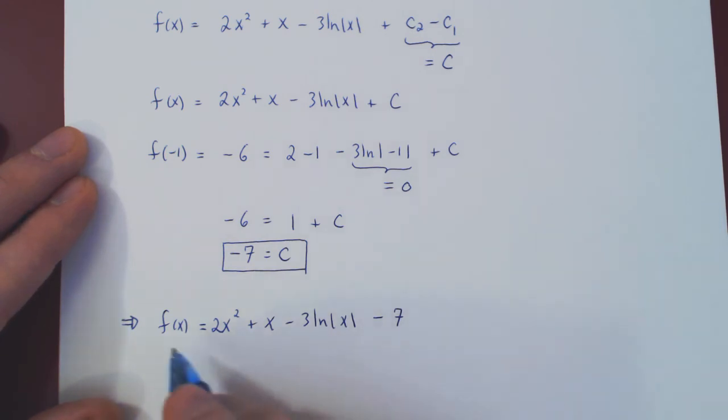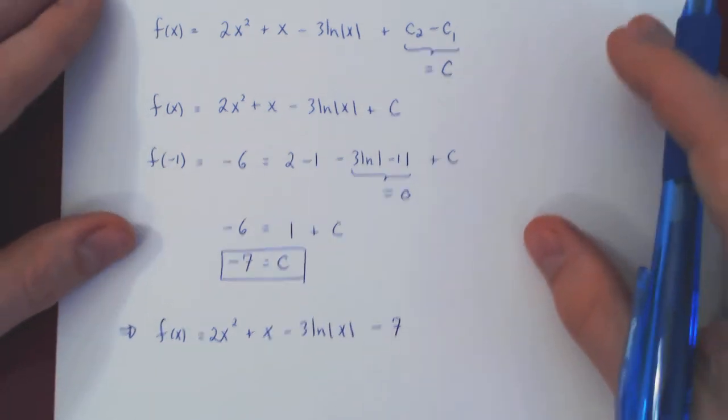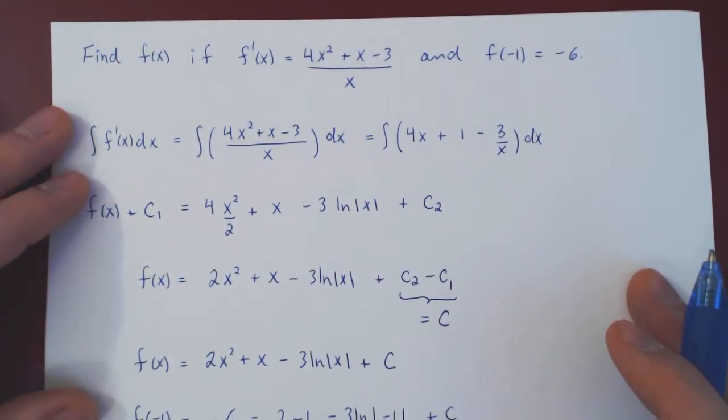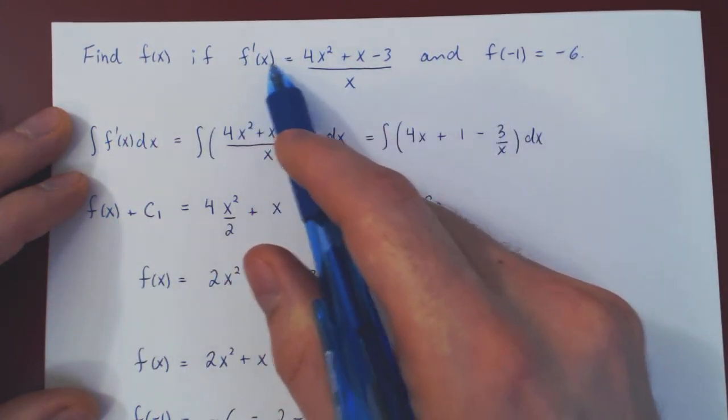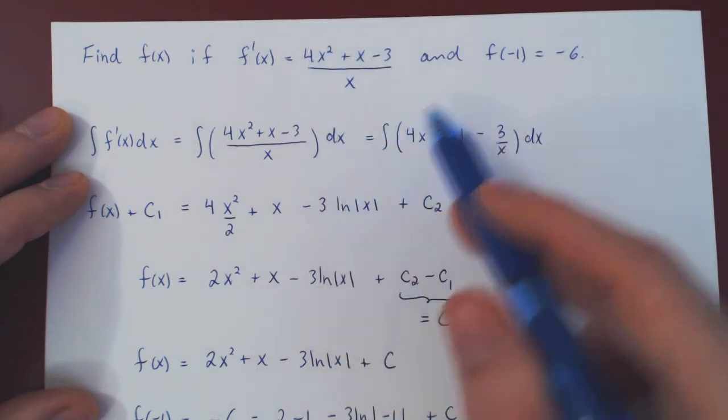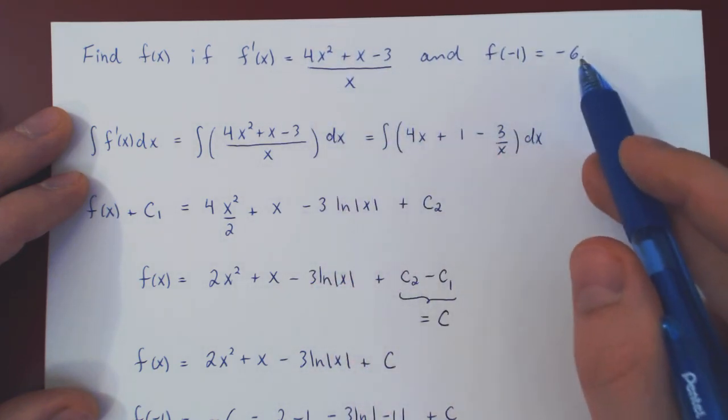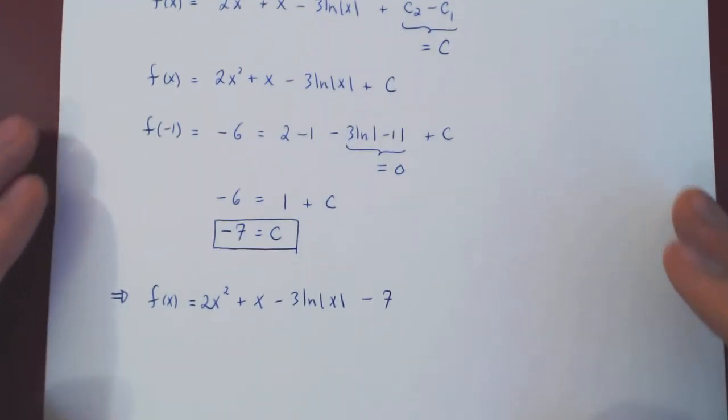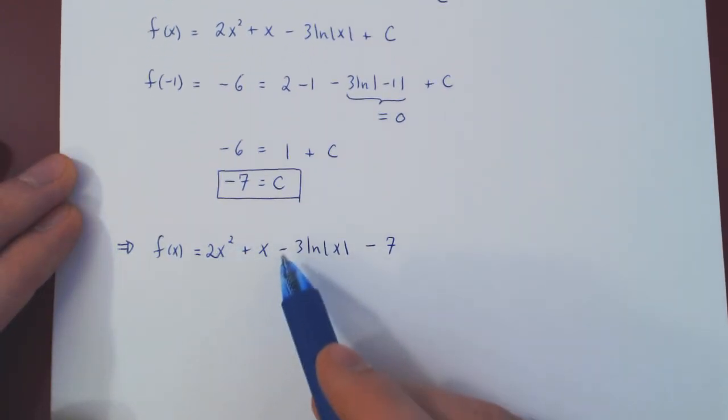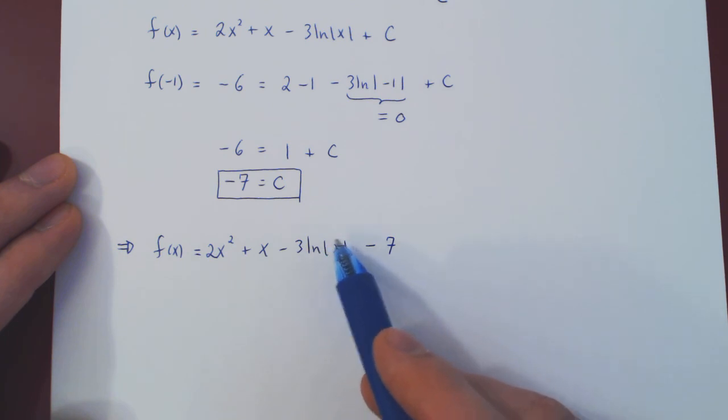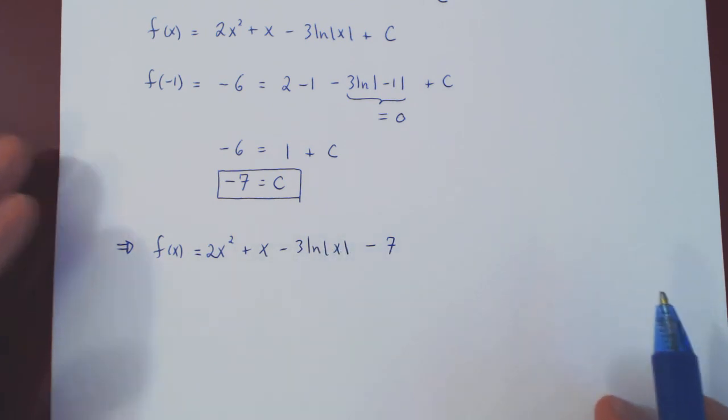And we're done. So if you go back and ask, what is the function that satisfies both these conditions? Whose derivative is equal to this function, and whose value at -1 is -6? The answer is, there is a unique function, and it is 2x² + x - 3 ln|x| - 7. And that's it.